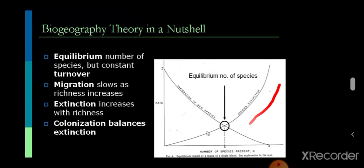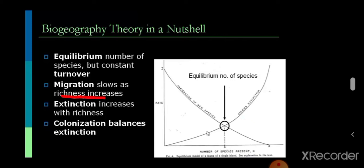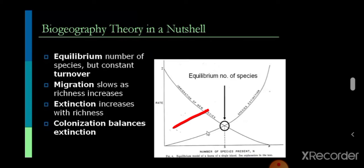The equilibrium turnover number means that the rate of immigration equals the rate of extinction. Migration slows as richness increases — when so many species are already present, there is no need for migration as resources are sufficient. Extinction increases with richness because as the number of species increases, competition for resources intensifies, including intra-specific competition within species and inter-specific competition between species.